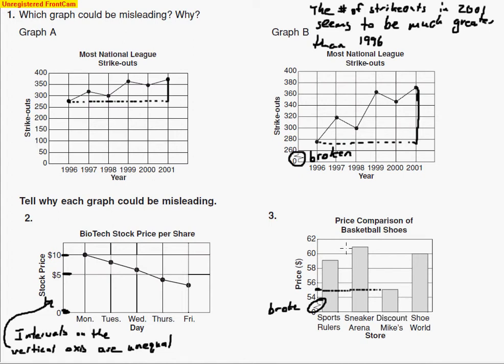Where Sneaker Arena has the most expensive, and theirs is about $61, maybe a little bit less, right around $61. And then, again, the discount mics is only $55. So that's not that much of a difference. It's only a $6 difference. But it seems to be a lot more because of the way the graph is displayed.